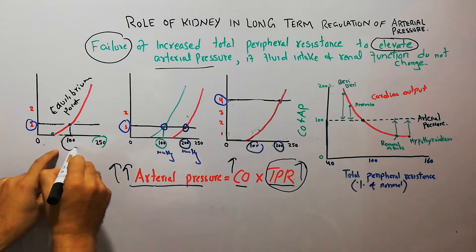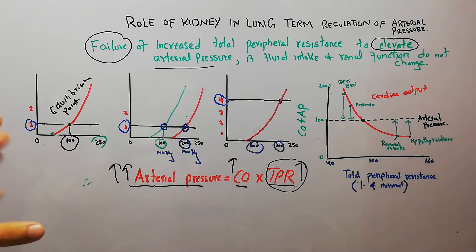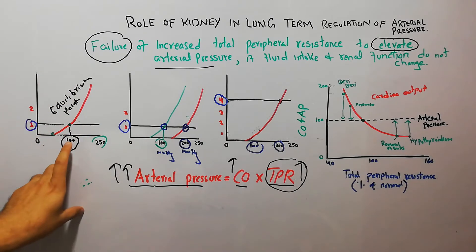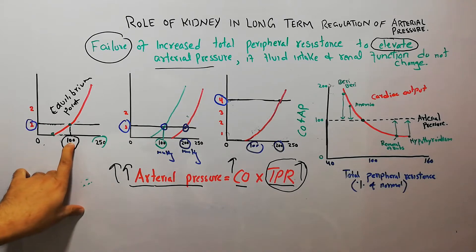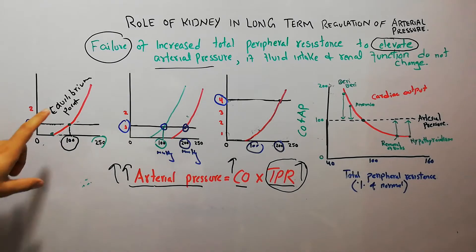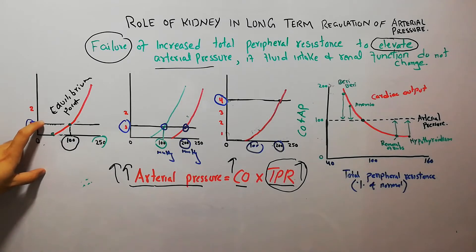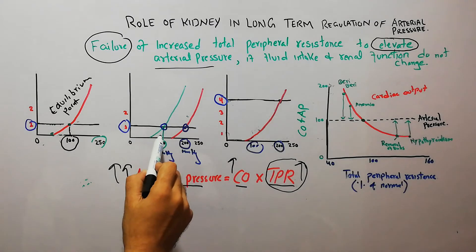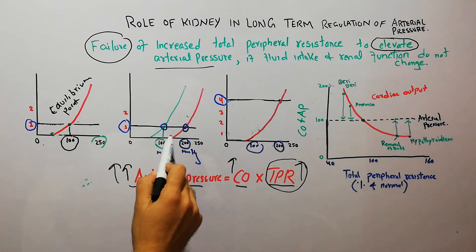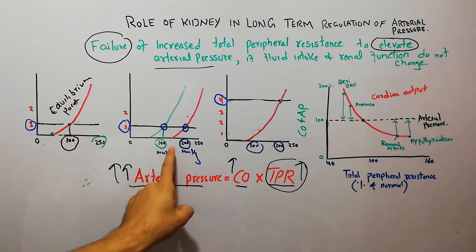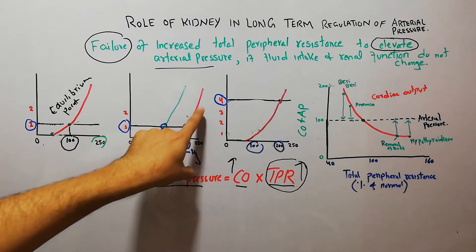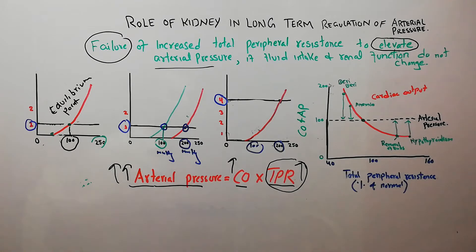The equilibrium point is at an arterial pressure of 100 mmHg, which is normal. The determinants of arterial pressure are the intake of salt and water and the renal functions. In order to bring a change in arterial pressure from its normal 100 mmHg, there must be a change in the renal function curve or a change in the intake of salt and water. At normal renal function, arterial pressure was 100, but a change in renal function can shift it to 200 mmHg.